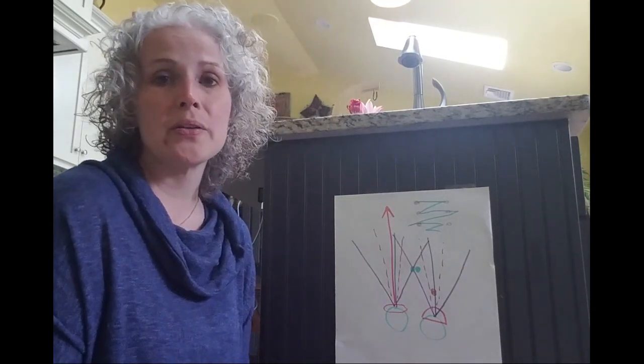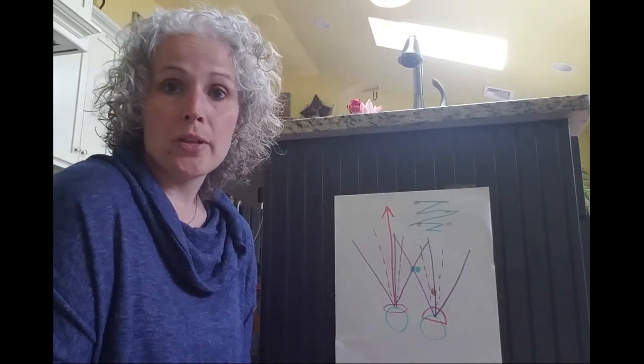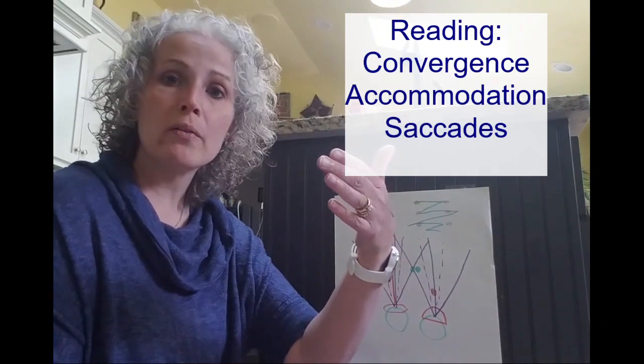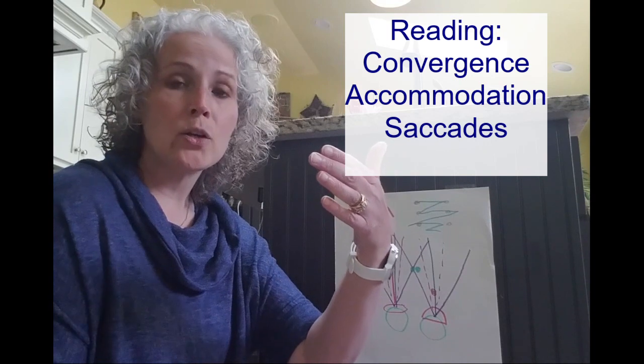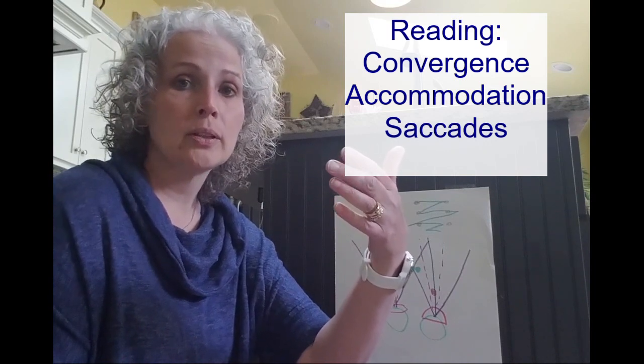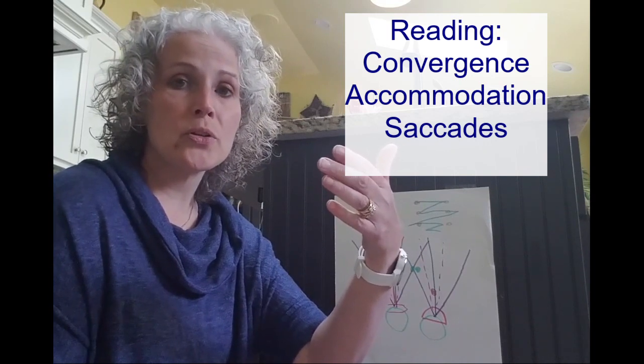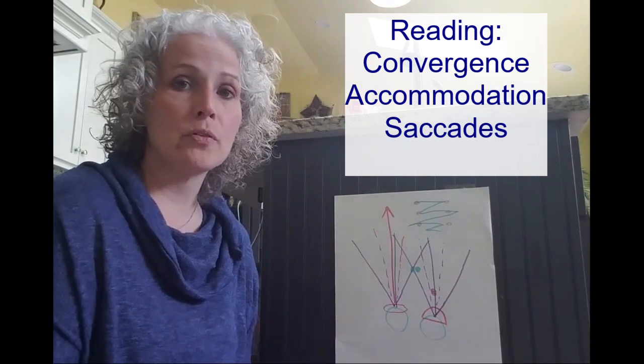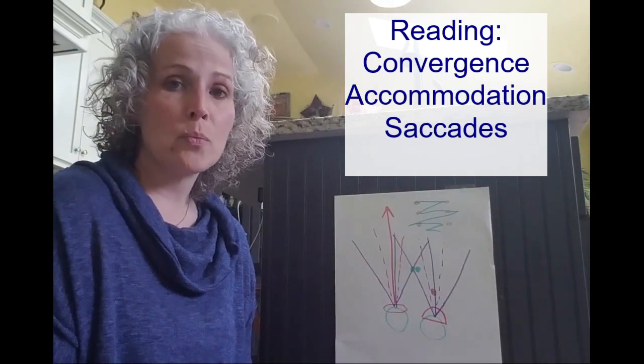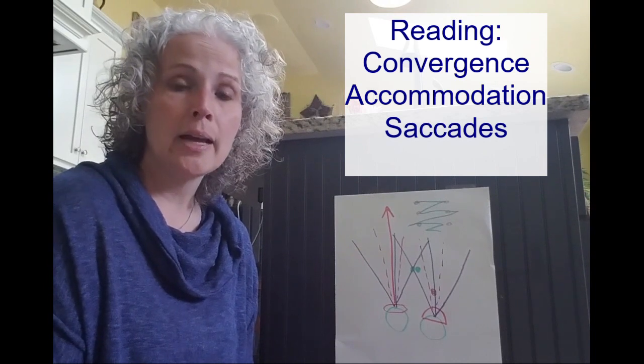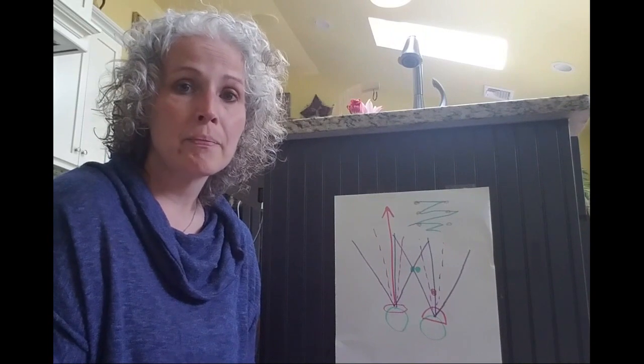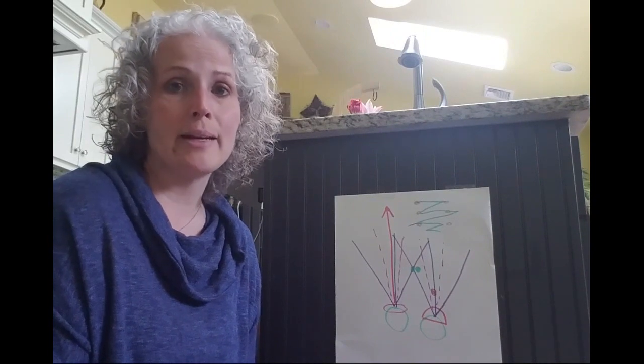So let's put all these three skills together for the task of reading. Your eyes need to converge to that point of where the page is. Your lens needs to change and make sure that those words are clear. And lastly, your eyes have to move from target to target and from word to word so that you understand what you're reading. If any or all of these skills are impaired, then you're going to have trouble with day-to-day function.